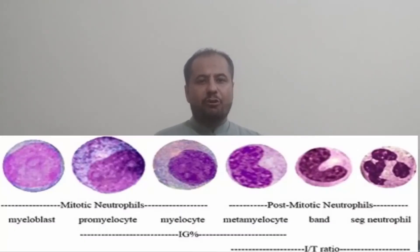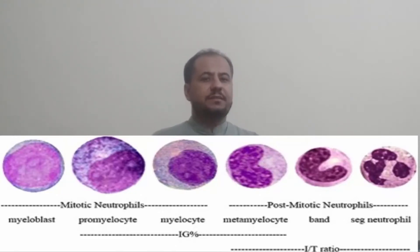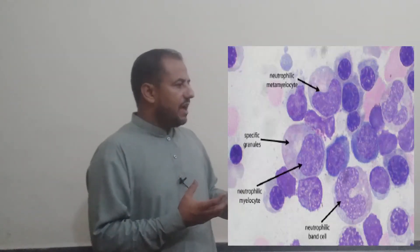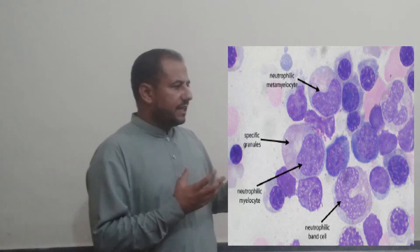In leucocyte, we will mainly focus on granulocyte. In granulocyte, we will focus on promyelocyte, myelocyte, metamyelocyte, band cells, and mature neutrophils. As we can see in this picture, this is a complete picture of the granulocyte series — myelocyte, metamyelocyte, and band cells. This slide shows us only the granulocyte series.